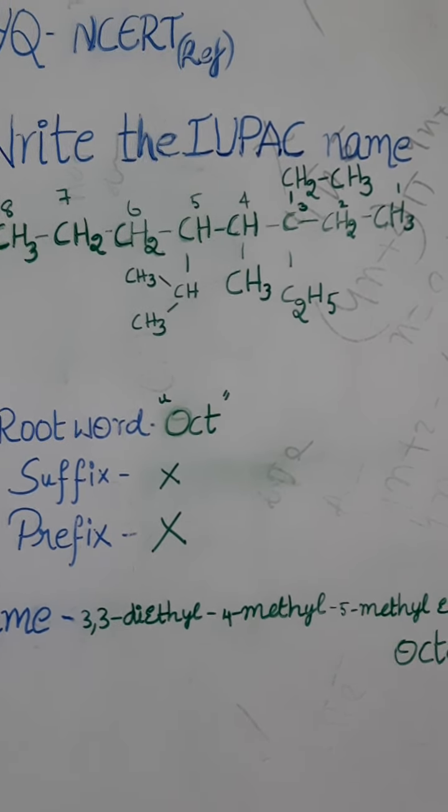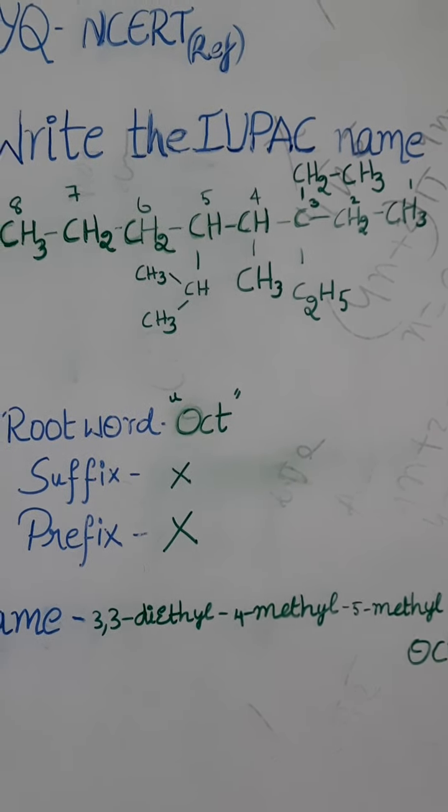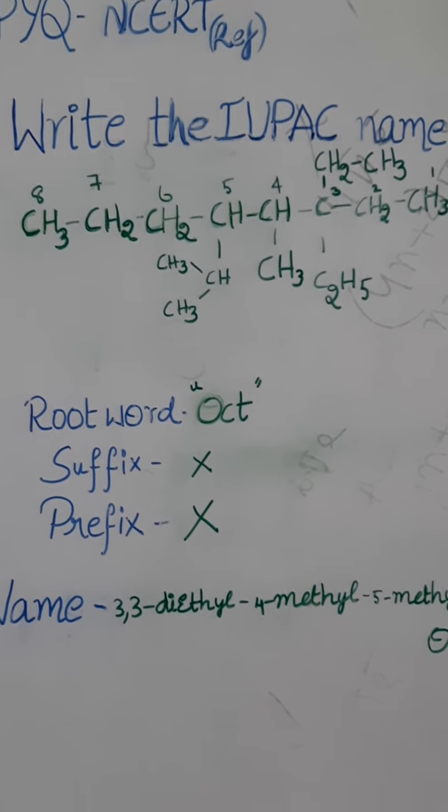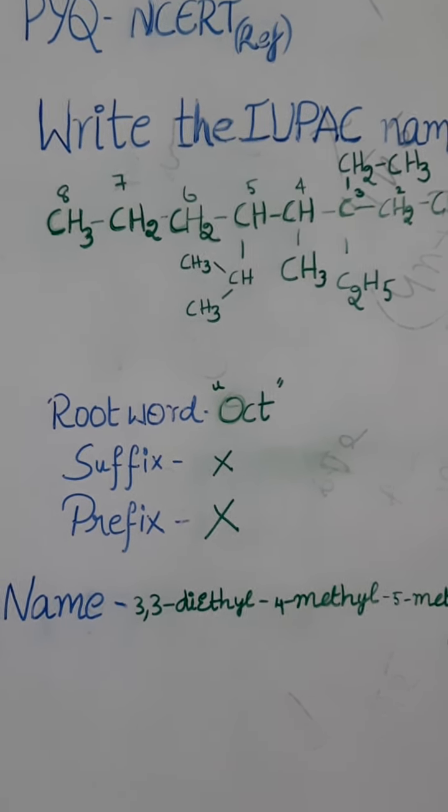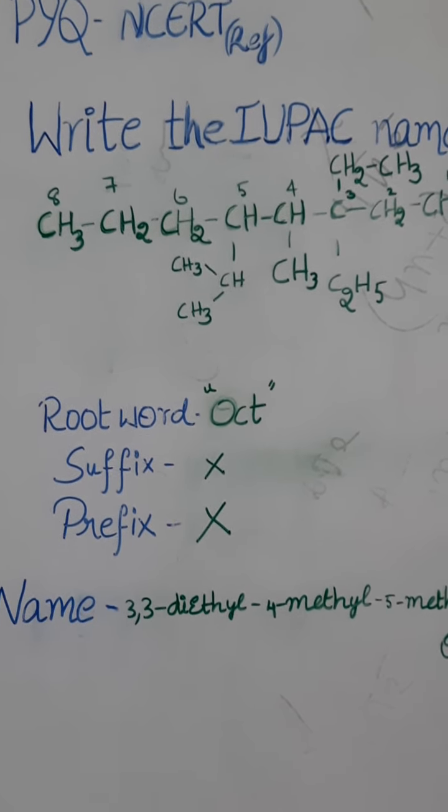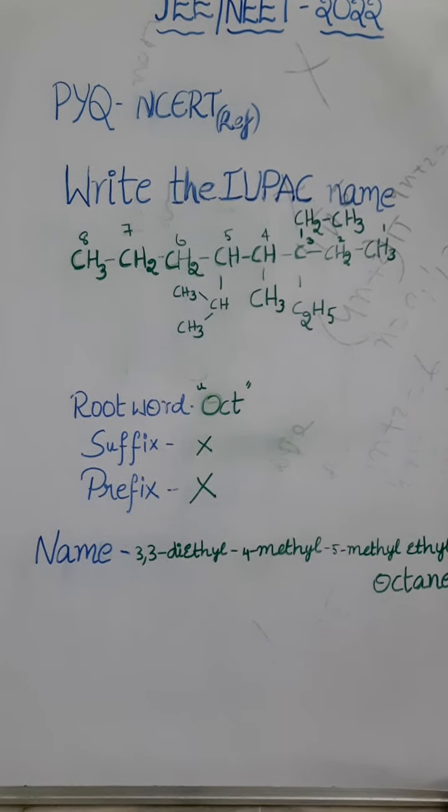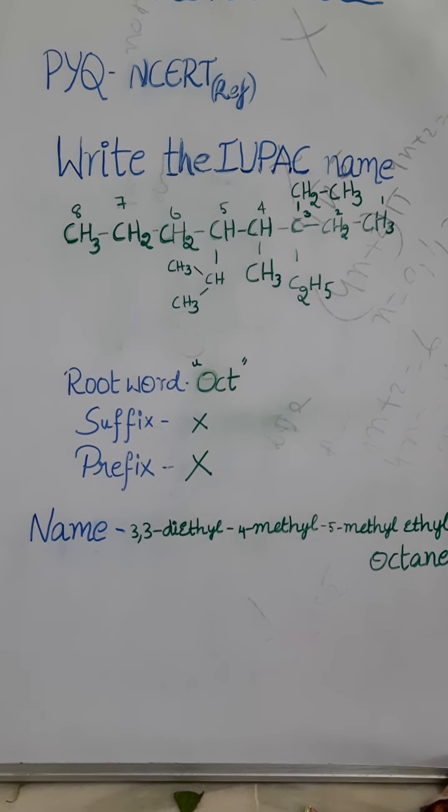And at third position we have 2 ethyl groups. At fourth position we have 1 methyl group. And at fifth position we have isopropyl group, and we can also write it as ethyl methyl group. So here as we have 8 carbon atoms, root word is oct. There is no suffix and no prefix present there.